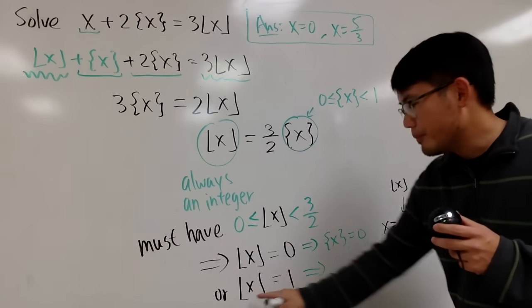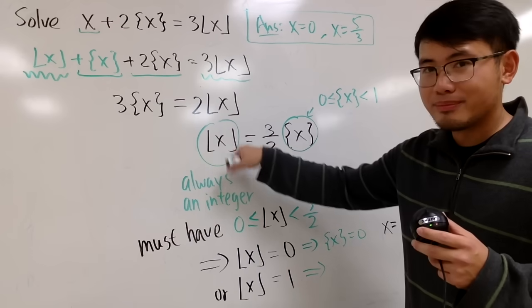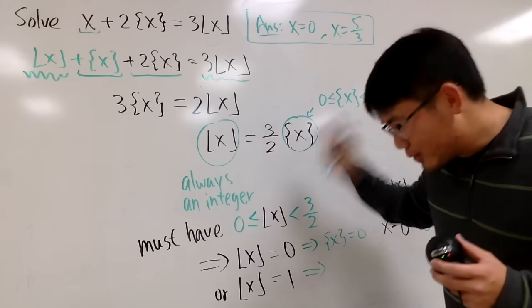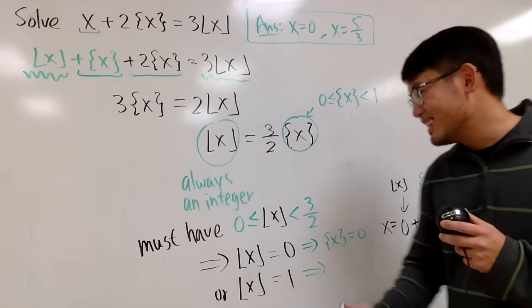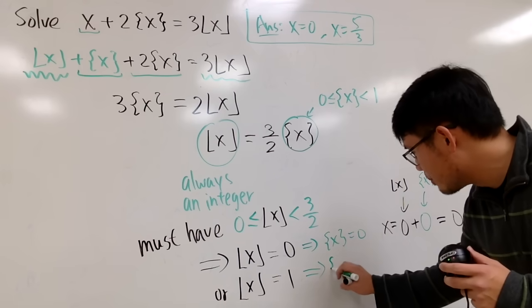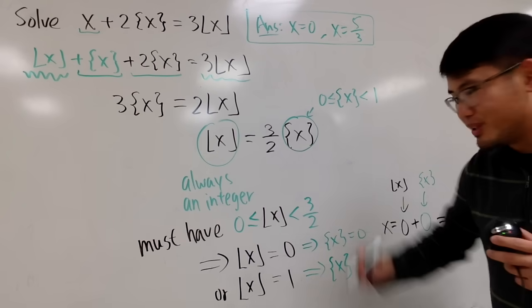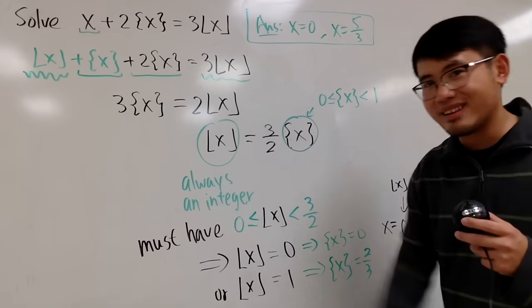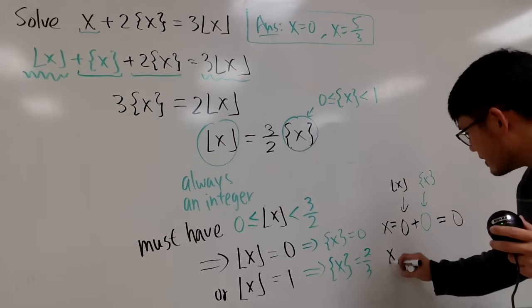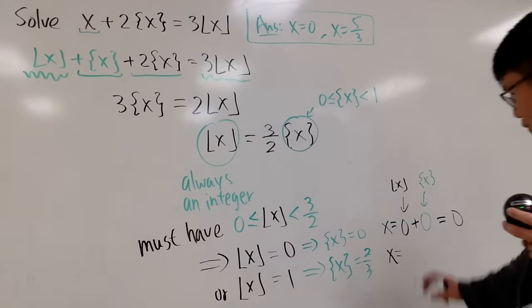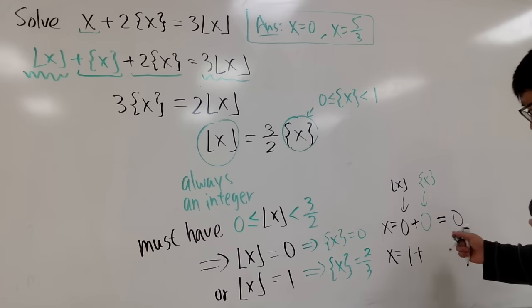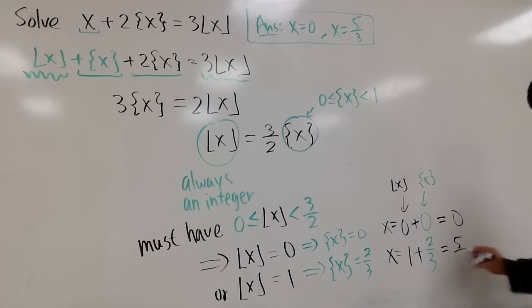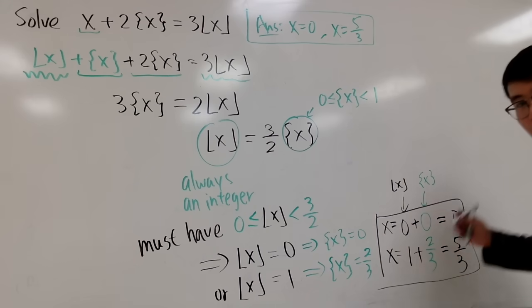The second situation: what's another non-zero integer in between zero and three over two? Of course it's just one, so the floor of x equals one. From here, we solve for the fractional part of x: plugging one in gives the fractional part of x equal to two over three. So x equals the floor of x plus the fractional part of x, which is one plus two thirds, giving us x equals five over three. These are your two answers.